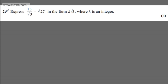This is question number 2, and it's worth 4 marks. We're asked to express 15 over root 3 minus root 27 in the form k root 3, where k is an integer.